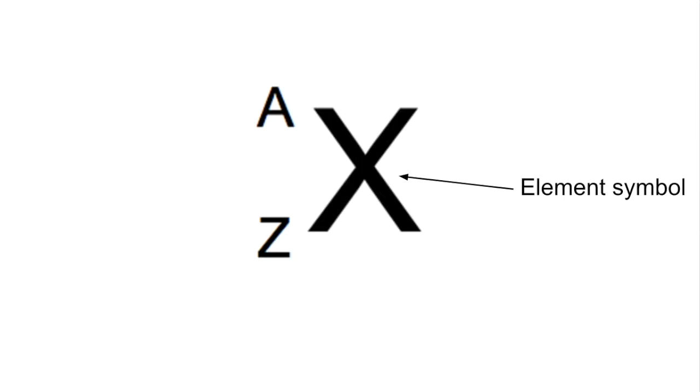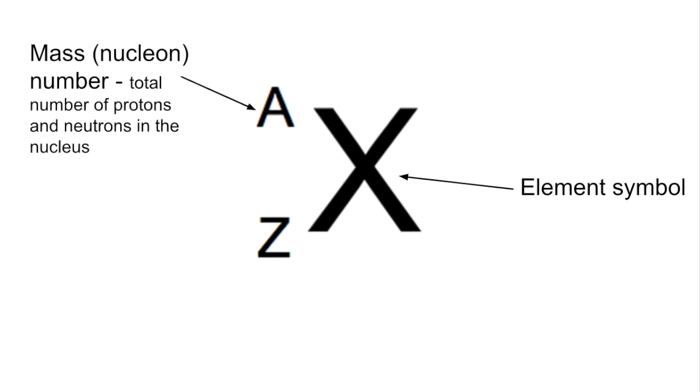So what do they represent? Well, the A represents the mass or nucleon number, and that tells us the total number of protons and neutrons in the nucleus of the atom.